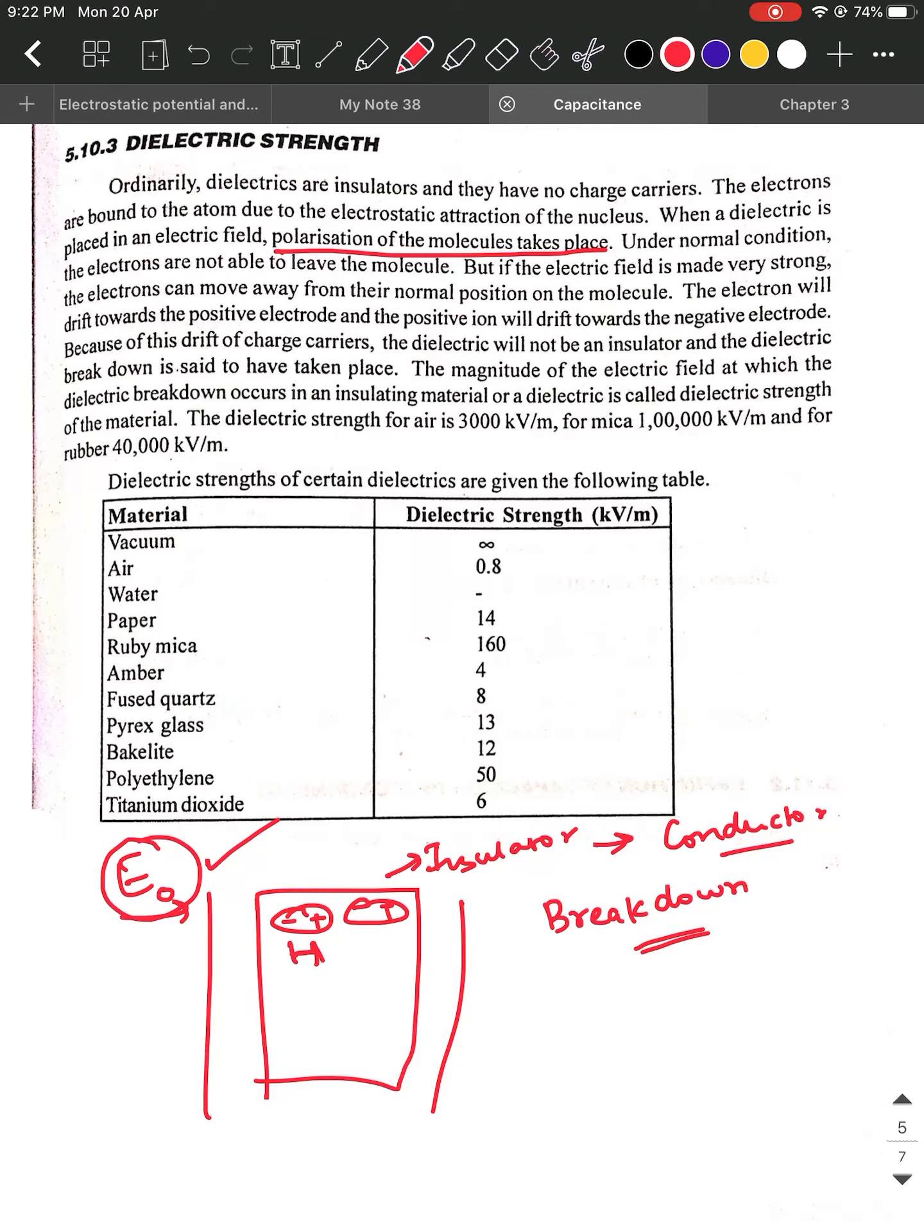When is this going to happen? Who is controlling it? It is the electric field. The dielectric strength has something to do with the magnitude of the electric field. The magnitude of the electric field at which the dielectric breakdown occurs in an insulating material or dielectric is what is called as dielectric strength of the material.